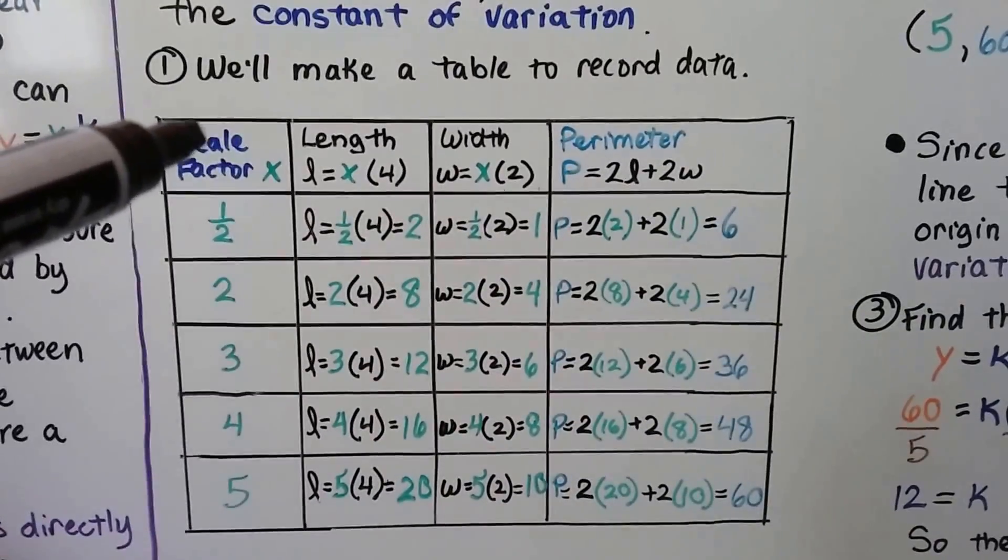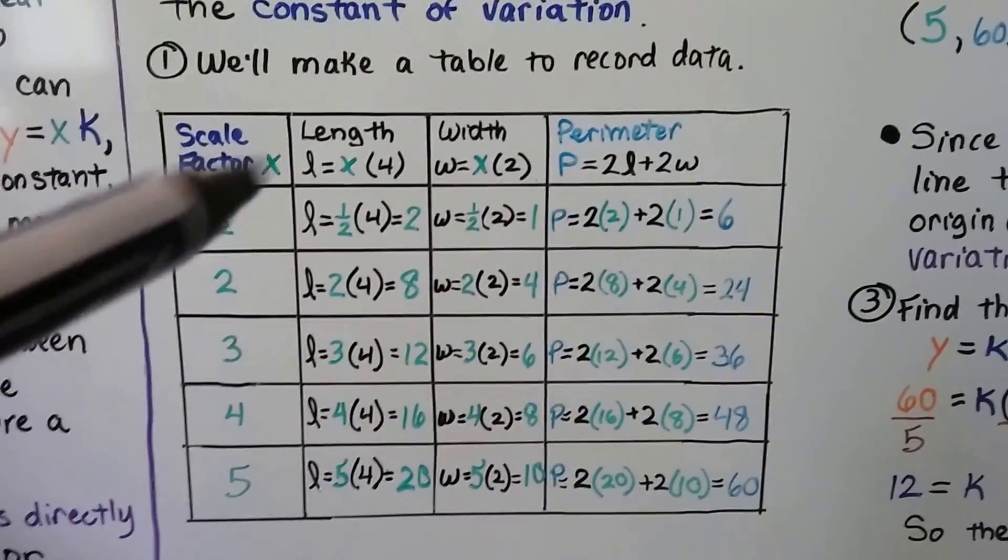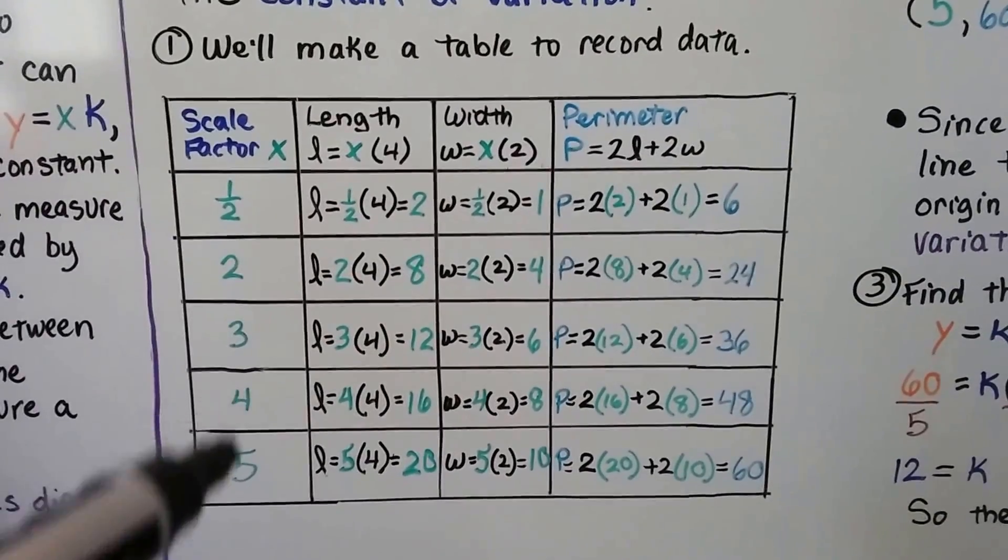We're going to use a scale factor of 1 half, which is going to equal x. So x is going to be 1 half, 2, 3, 4, or 5.